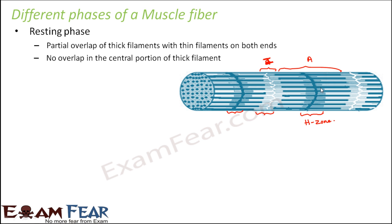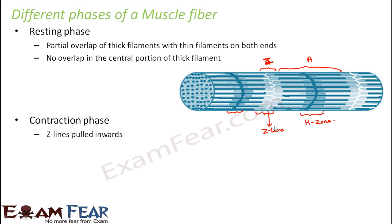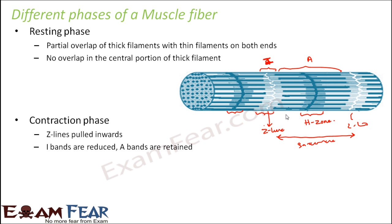In the contraction phase, the sarcomere will get contracted. The sarcomere is the region between two Z-lines. When contraction occurs, the Z-lines will be pulled inwards, meaning the sarcomere contracts. As a result, the I-bands will be reduced — the width of the I-band gets reduced because the Z-lines are pulled closer together.